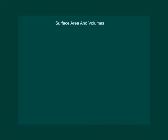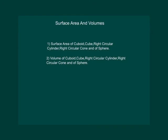Surface Area and Volume. In this chapter we start with Surface Area of Cuboid, Cube, Right Circular Cylinder, Right Circular Cone and Surface Area of Sphere. Then we shall move to Volume of Cuboid, Cube, Right Circular Cylinder, Right Circular Cone and of the Sphere.